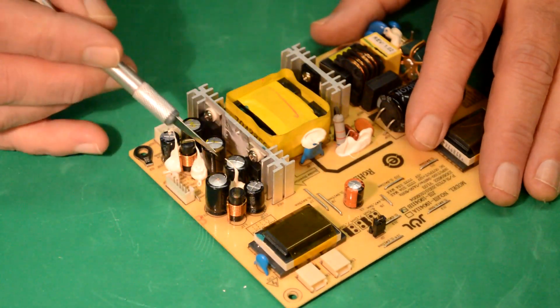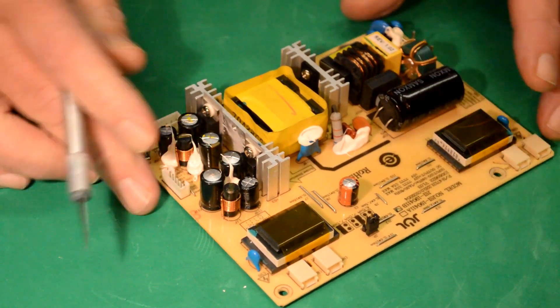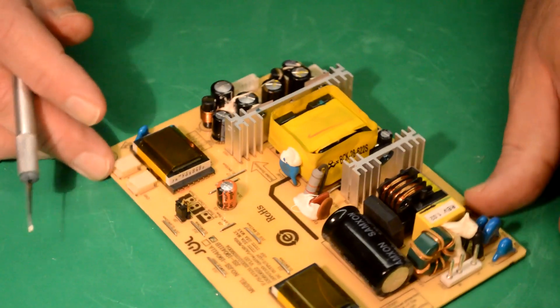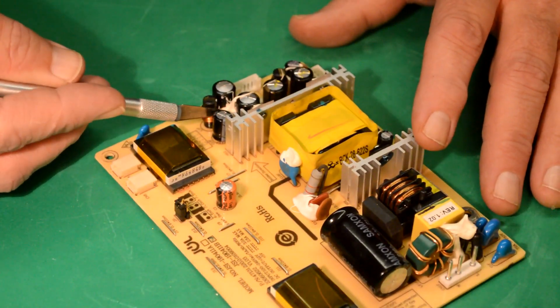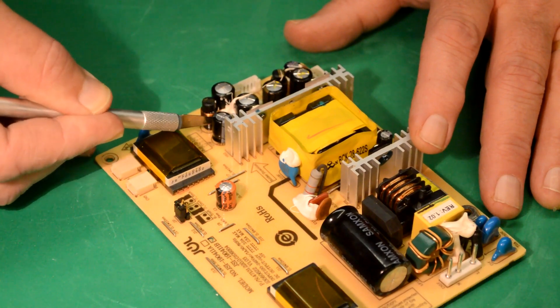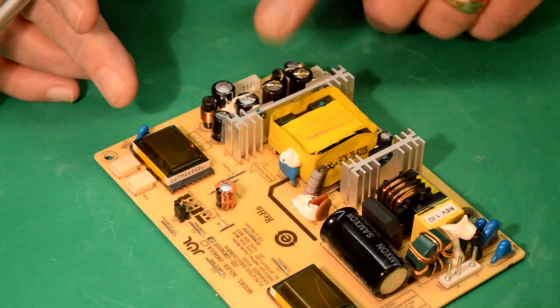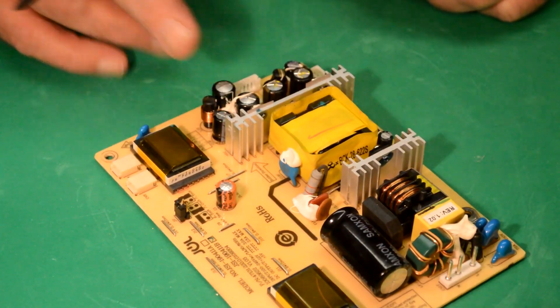So I'm just going to use an X-Acto blade and carefully carve away this silicone sealant that is around these capacitors, and I have to be very careful that I don't cut the inductor that's there. So I'm going to go ahead and do that, and then we'll heat them up from the back and see if we can't get them pulled out of there.